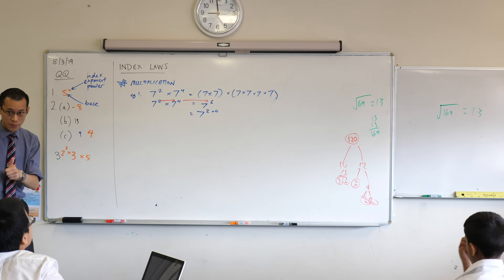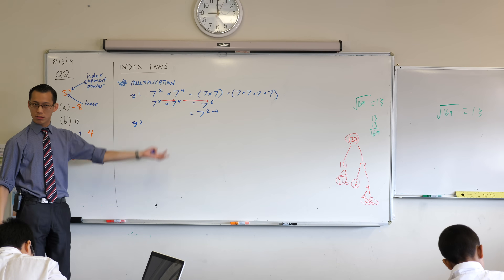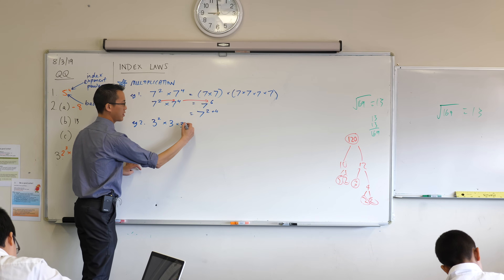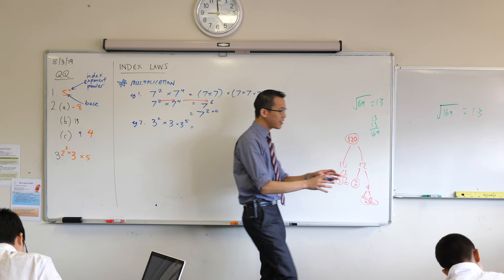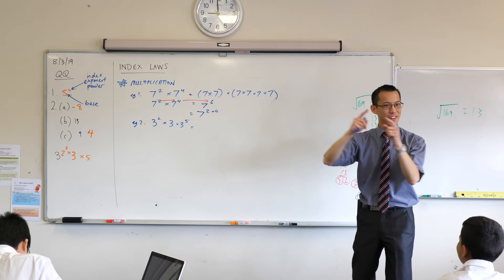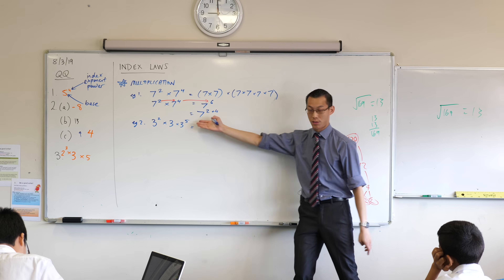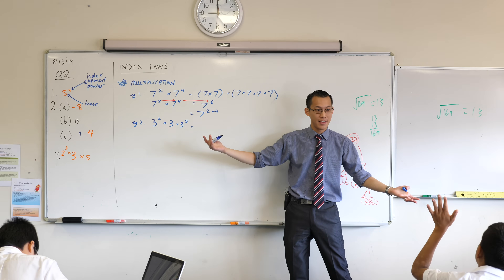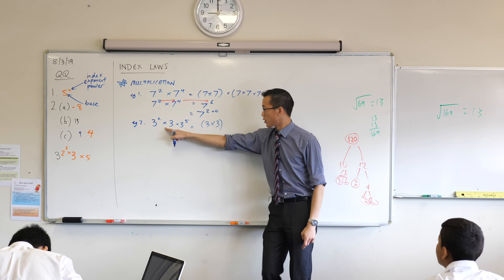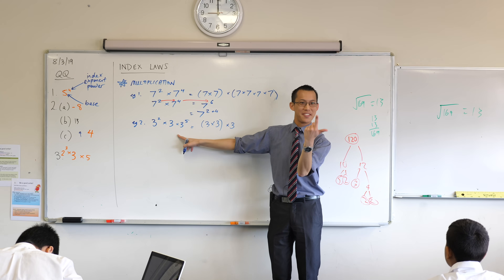Does this make sense? Any questions? Okay. Now, what if you've got not just two numbers with the same base, but a whole bunch of them? Let's have a look at something like three squared times three times three to the power of five. Again, because we're trying to establish where this comes from, I don't just want you to apply a rule like a machine — I want you to know why it's going on. So let's expand this first. Three squared means three times three. Then we multiply the middle three, and three to the power of five is three times three times three times three times three.